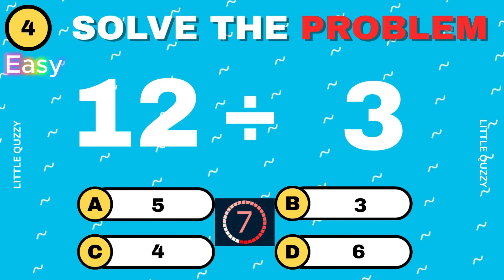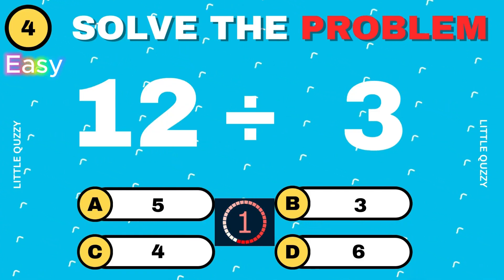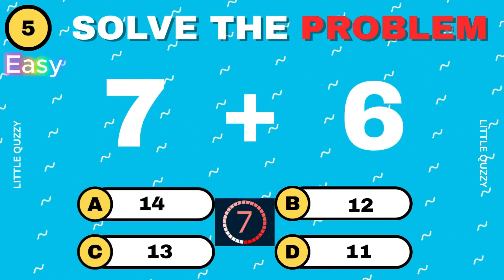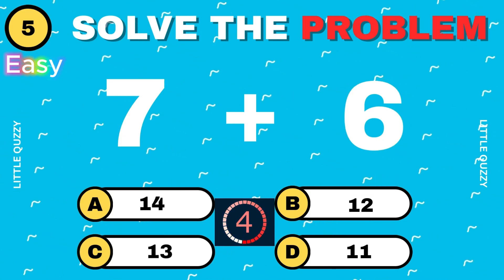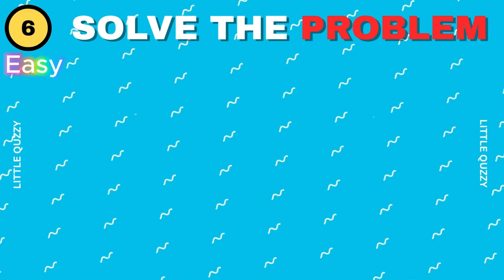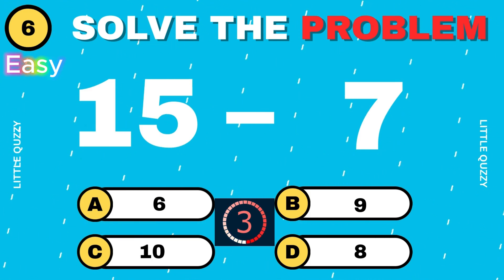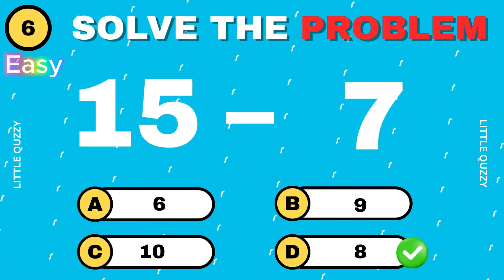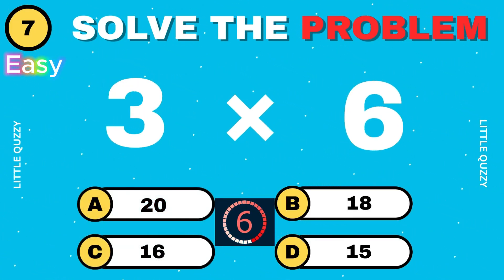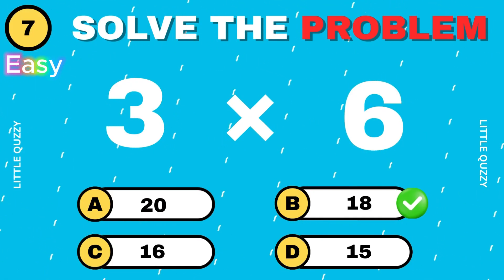What is 12 divided by 3? The correct answer is 4. What is 7 plus 6? The correct answer is 13. What is 3 times 6? The correct answer is 18.